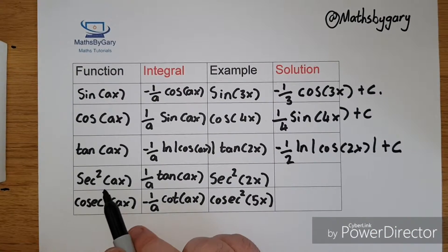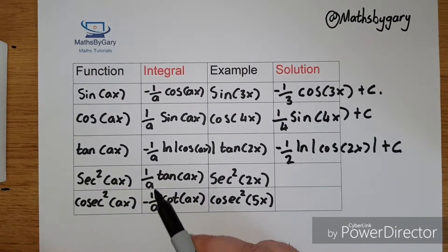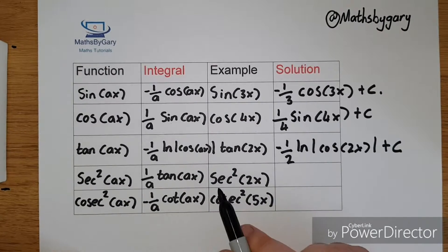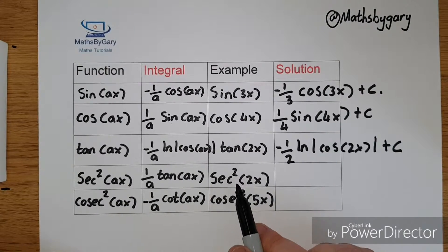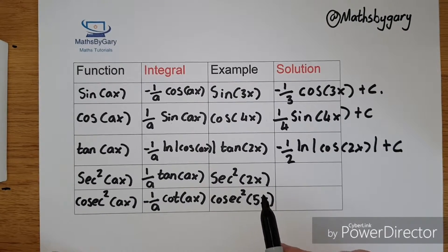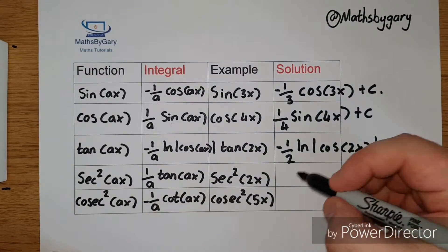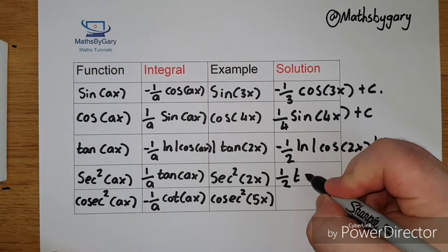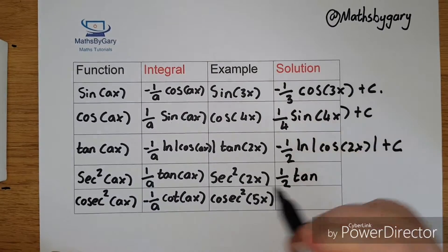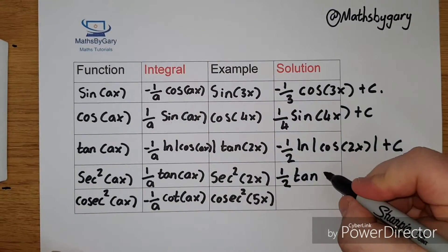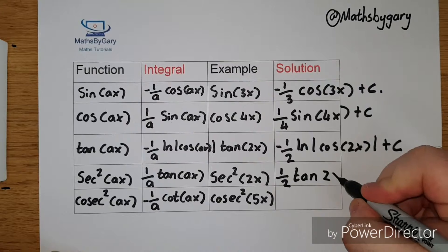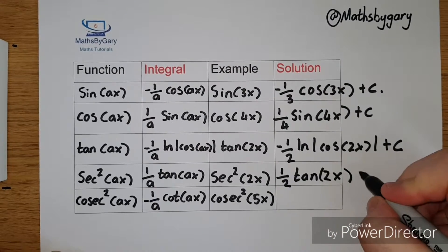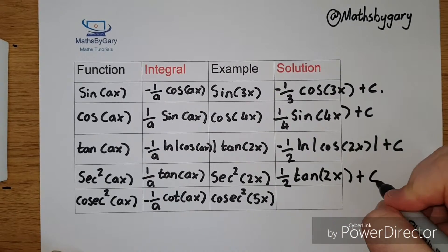The integral of sec squared(ax) becomes 1 over a times tan(ax). So sec squared(2x) will become 1 over 2 times tan(2x) plus c.